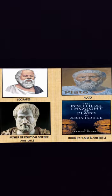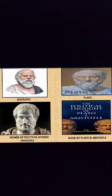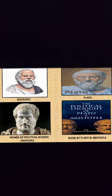Socrates and his disciple Plato were great political thinkers. Plato, in his famous book Republic, for the first time discussed the nature and functions of the state and the government. Aristotle, the ancient Greek thinker and student of Plato, is recognized as the father of political science for his valuable contributions to its growth and development. He wrote the first treatise in political science called 'Politics', in which he discussed the origin, development and functions of the state. Greeks used the term 'politics' for the study of state, derived from the Greek word 'polis' which means city-state.